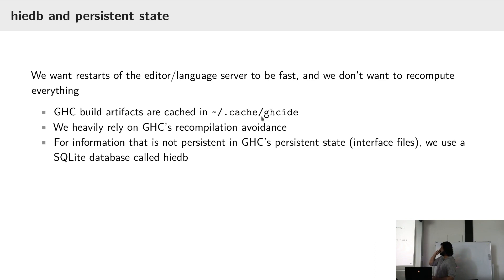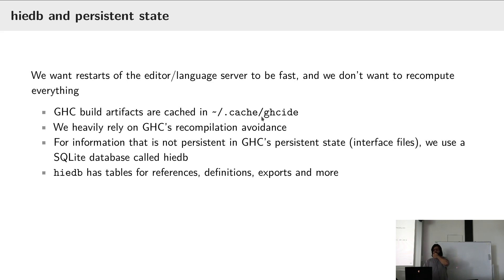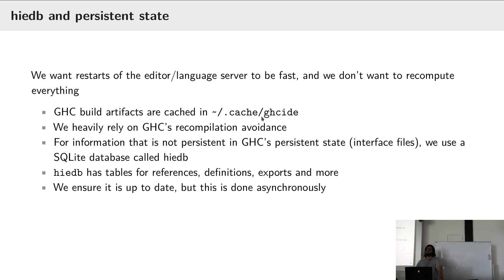Some additional information we need to store, like references, which aren't stored in raw ASTs — those things are not in interface files. They go in a SQLite database called HIEDB, managed by library code HIEDB. It has tables for things generally useful in GHC IDE. It's also a standalone program you can use to get IDE-like features like references, types at point, and definitions. SQLite turns out to be a really convenient way of stashing data and querying it with atomicity guarantees. The indexing is done asynchronously, so references requests might not be 100% accurate all the time especially right after you finish typing.